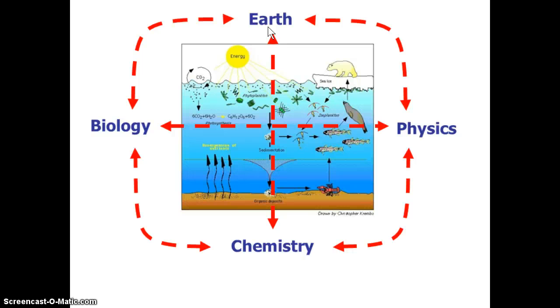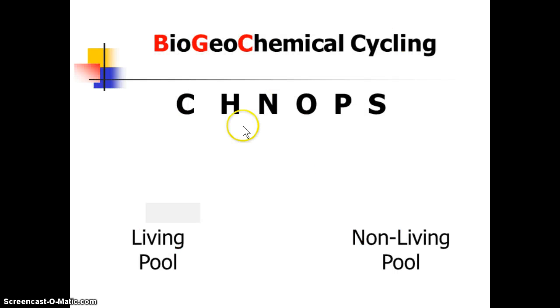And we have a great word, one of my favorite words of all time, to describe that. And it's called biogeochemistry. So the biology, Earth, chemistry, and how it interacts. And when we study the cycling of that, we call it biogeochemical cycling. So biology, Earth, and physics, and chemical cycling.